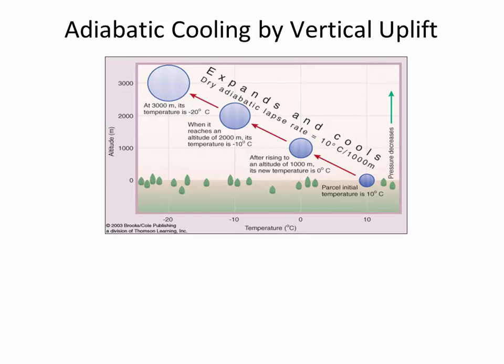This figure is showing that an air parcel at ground level is ten degrees Celsius. When it has risen by a thousand meters, it cooled off to zero. When it rises another thousand meters, it cools off to negative ten, and so on.